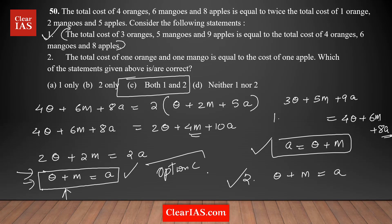This is actually an easy question. You just need to form the equation using three variables, simplify it, and then cross-check each statement to see whether it's true or not. So option C is the right answer for this particular question.